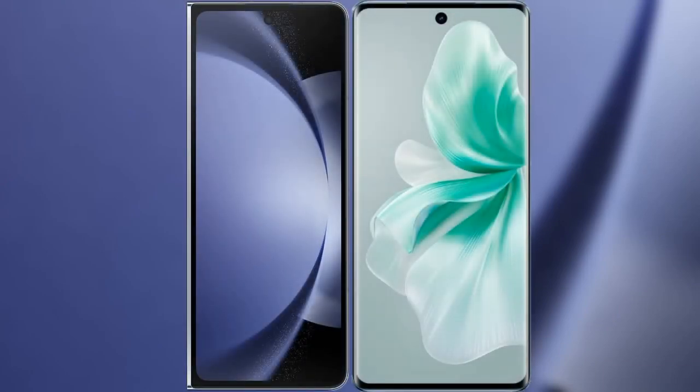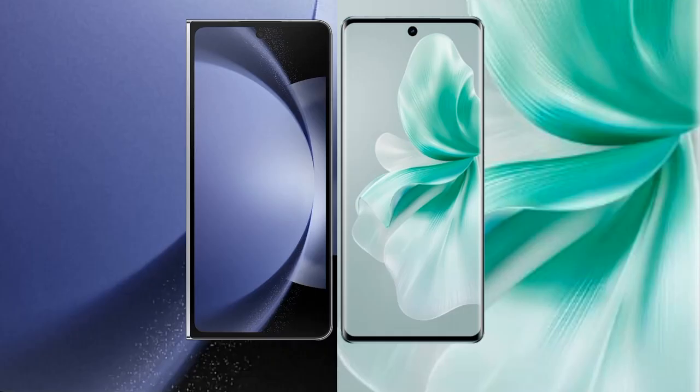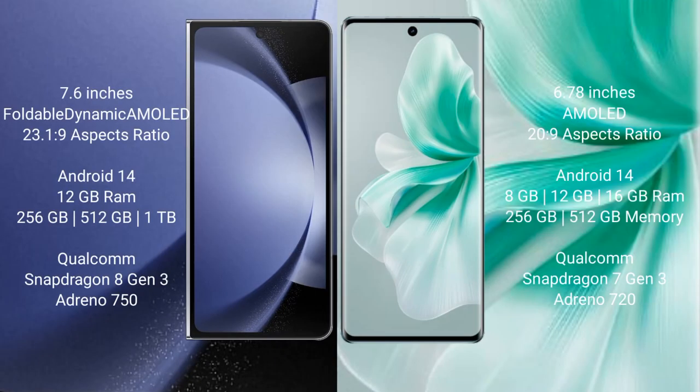I will compare the new Samsung Galaxy Z Fold 6 with Vivo Y18. Samsung Galaxy Z Fold 6 comes with a 7.6-inch foldable Dynamic AMOLED display. Vivo Y18 comes with a 6.78-inch AMOLED display.